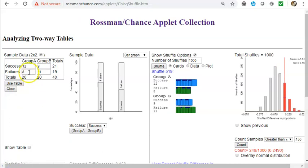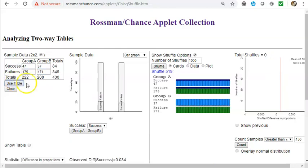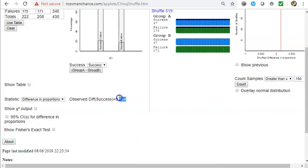Go back to the Rossman chance app and enter the table: 47, 37, 175, and 171. Hit use table. I see that this difference between them was 0.034, or 3.4%.